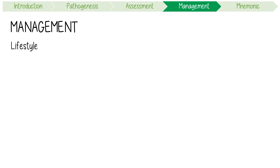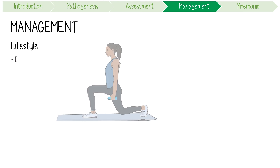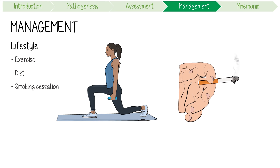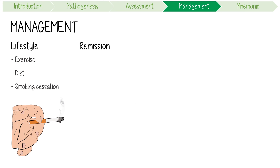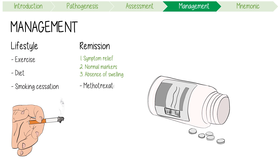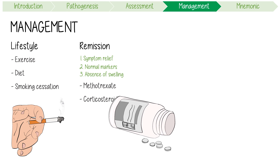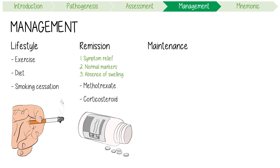There are four main tenets of RA management. First, lifestyle management: encourage regular exercise, a good diet, and alcohol and smoking cessation. Second, induce clinical remission as early as possible, defined as symptom relief, normalization of inflammatory markers and absence of joint swelling. This is often done with conventional DMARDs like methotrexate. Corticosteroids are often initially combined during induction. Third, maintain clinical remission: when disease control has been achieved, the DMARD may continue at a reduced dose.